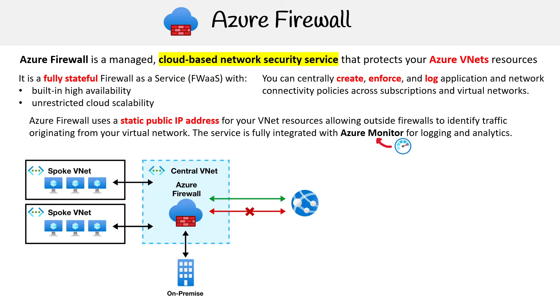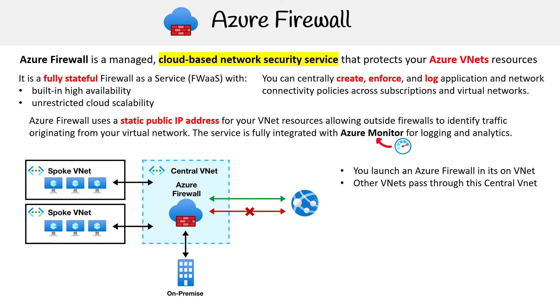Here is a representation of Azure Firewall. The idea is that you're going to launch an Azure Firewall into its own VNet, and then other VNets and your on-premises or other resources are going to pass through that central VNet onto wherever they want to go.